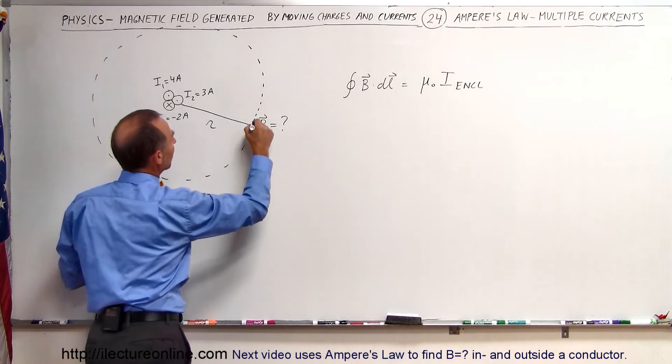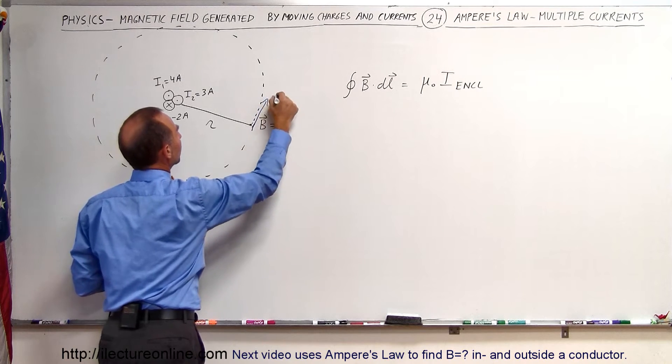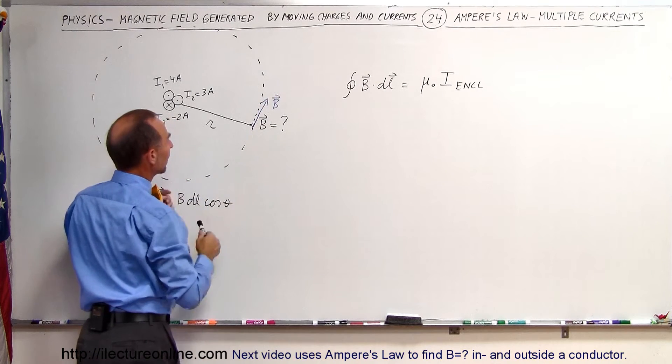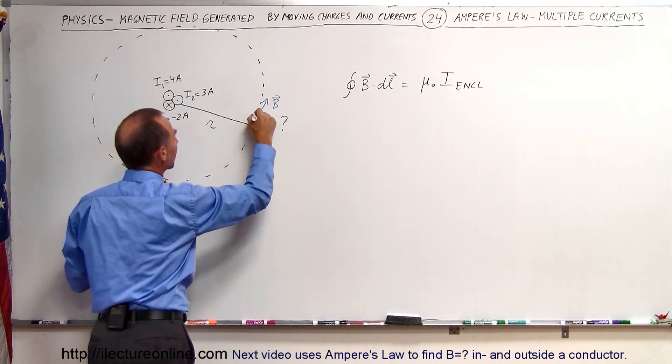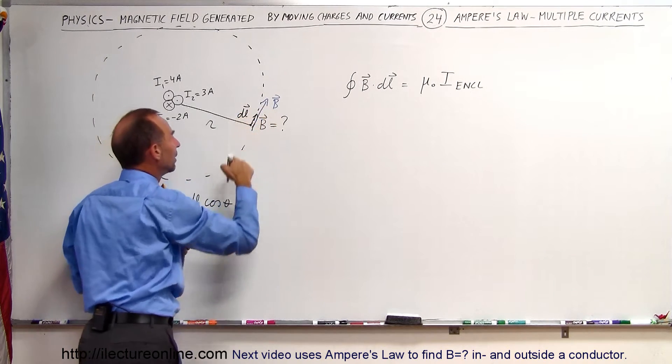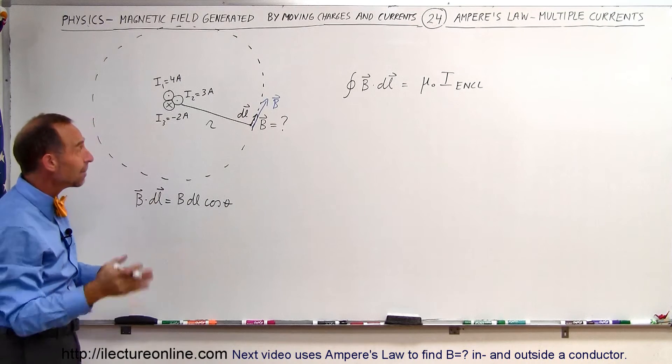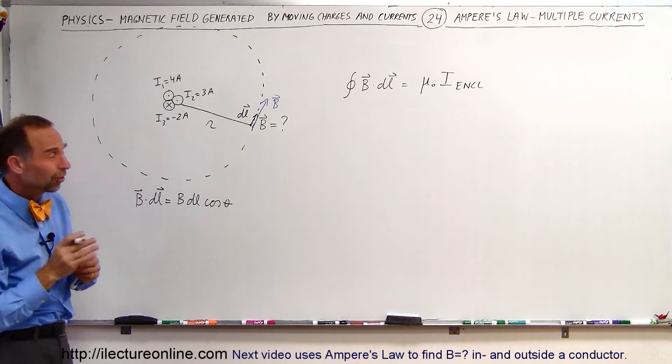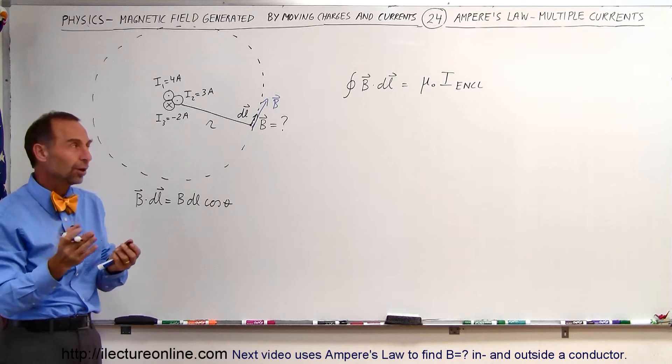...that if we assume that the B field is going to be in this direction, then we also know when we integrate that with the line integral right there, if that's our small little line segment, B dot DL is simply going to be B times DL times the cosine of zero degrees between them, since the cosine of zero is equal to one.